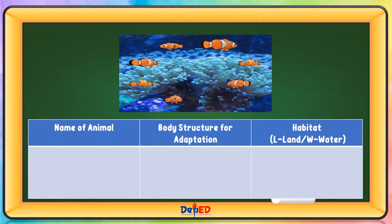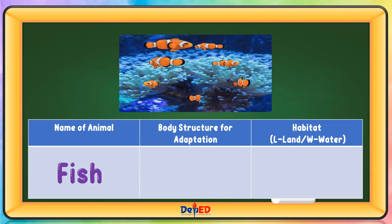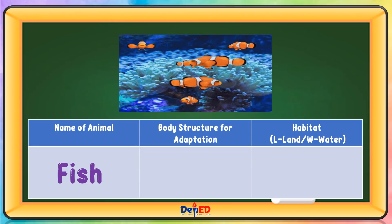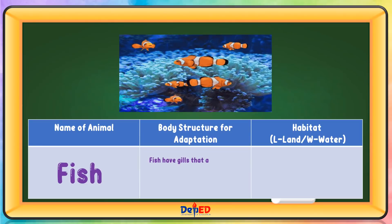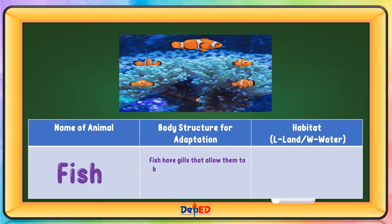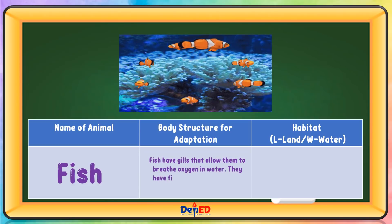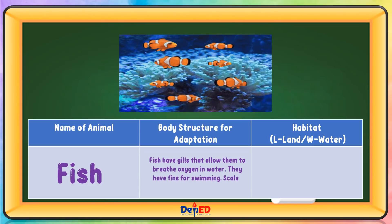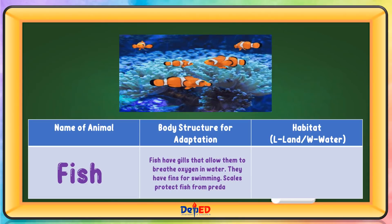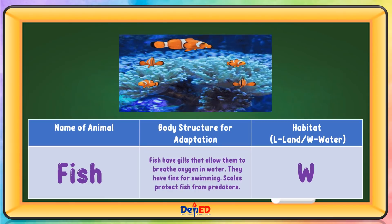Name of animal: Fish. Body structure for adaptation: Fish have gills that allow them to breathe oxygen in water. They have fins for swimming. Scales protect fish from predators. Habitat: Water.